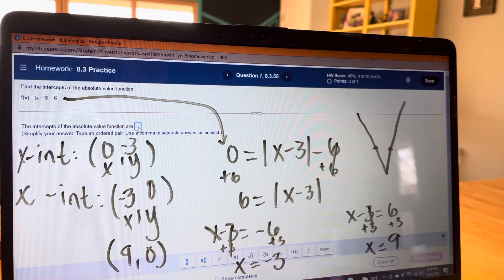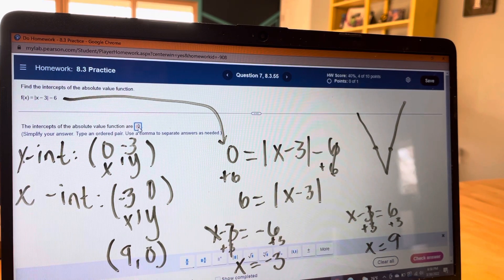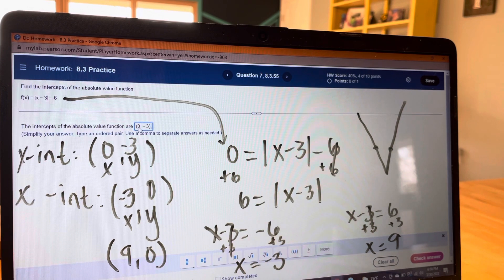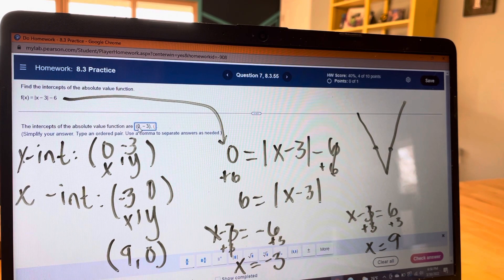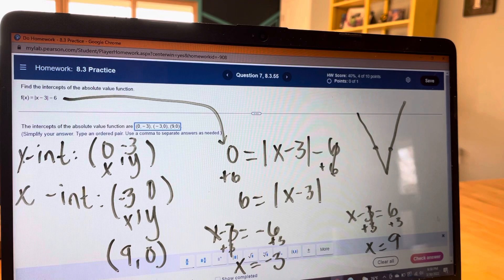So we need to plug in or write out our intercepts. We have one. That's our y-intercept. x-intercept is negative 3, 0. The other x-intercept is 9, 0. Here we go.